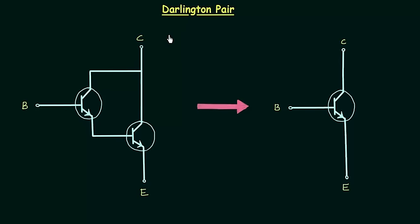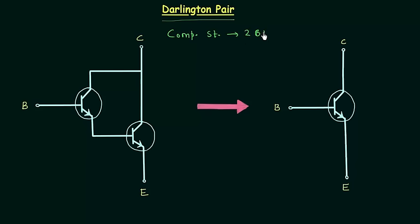In the previous two lectures we completed cascaded systems and now I will explain the working of the Darlington pair. The Darlington pair, or Darlington transistor, is a compound structure because it contains two BJTs — two bipolar junction transistors — connected to provide a very large current gain. We use the Darlington pair in applications which require very large current gain.